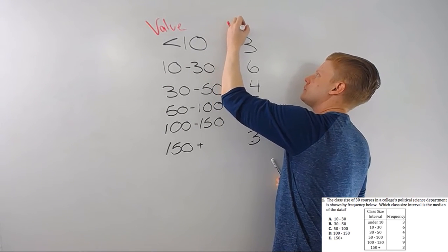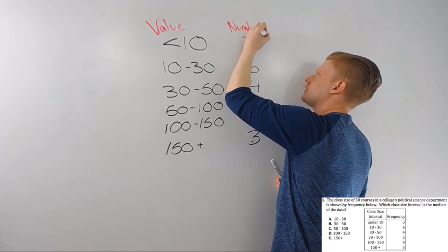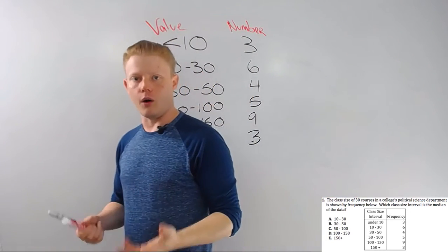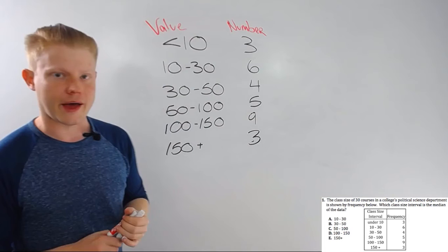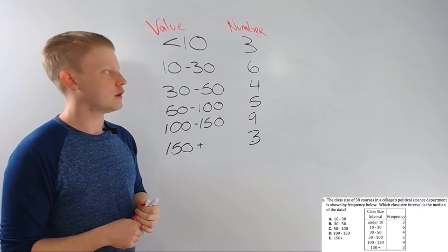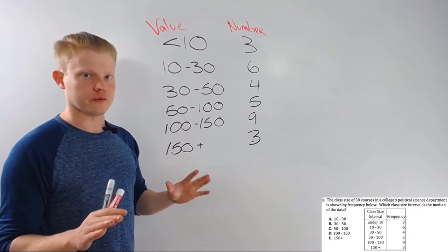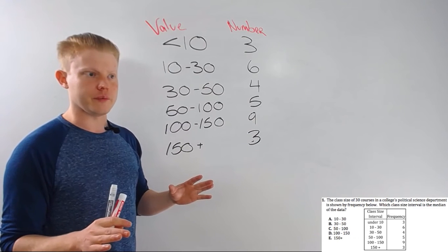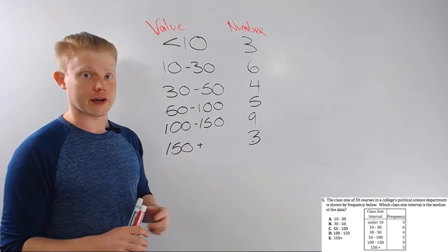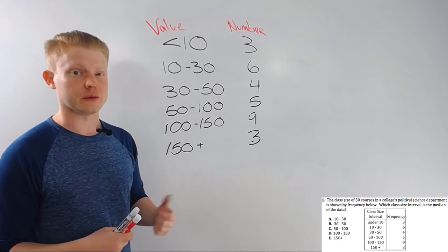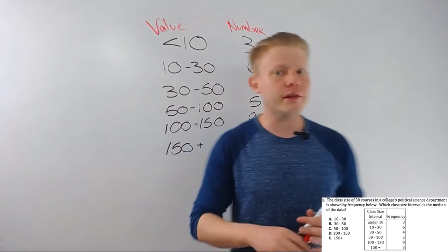And then this is the number of things that goes in each category - it's the frequency. I'm going to say it's the number because I think that's a little friendlier, but frequency is how often. How often is a class under 10? Now median is middle value. If you have any trouble with median at all, I really encourage you to check out the median video because it's actually really helpful.